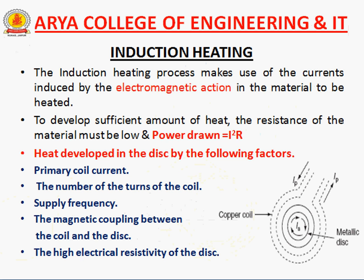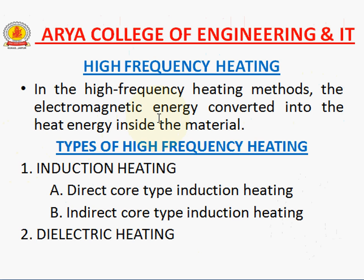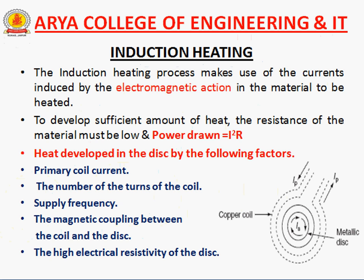Now we are going to high frequency heating. In the high frequency heating method, the electromagnetic energy is converted into heat energy inside the material. There are two types: induction heating and dielectric heating. Induction heating is also of two types: direct core type induction heating and indirect core type induction heating. The induction heating process makes use of current induced by electromagnetic action in the material to be heated, to develop sufficient amount of heat.